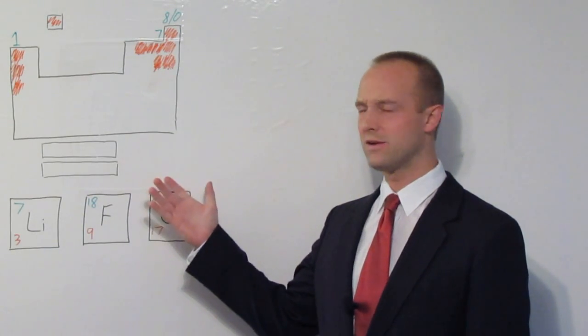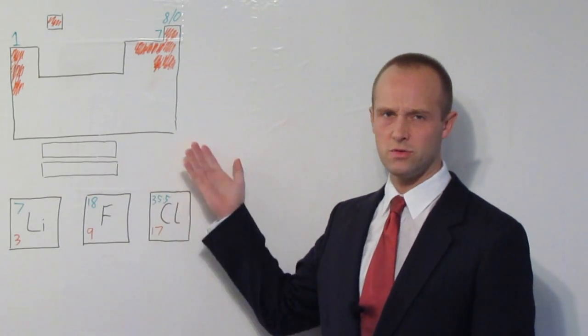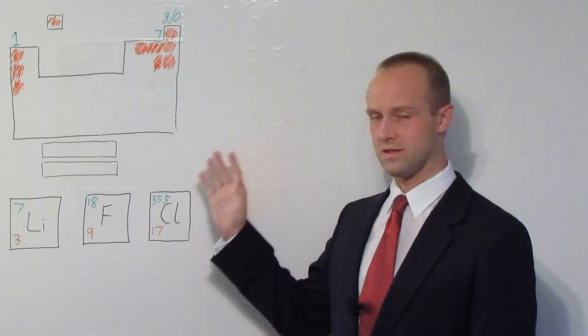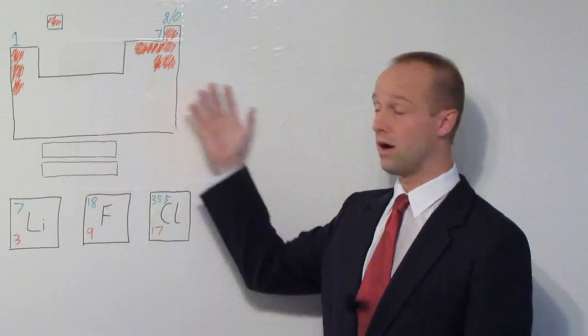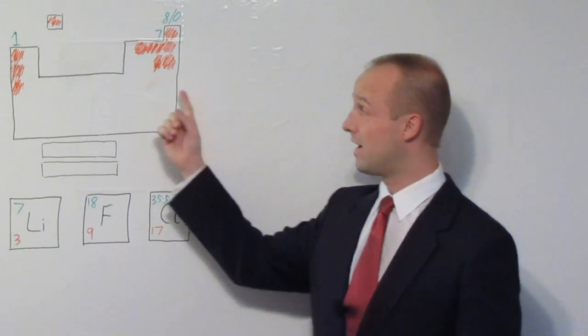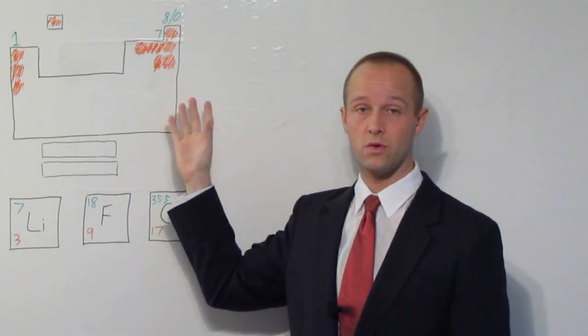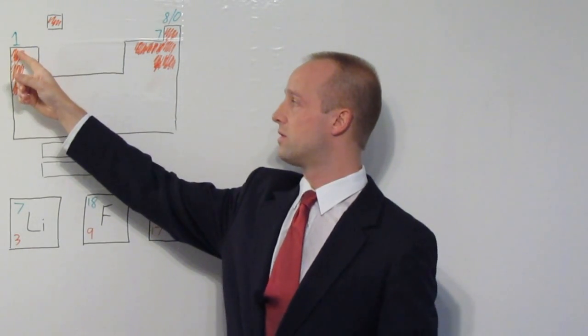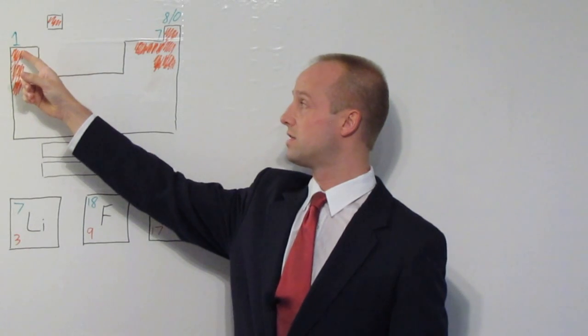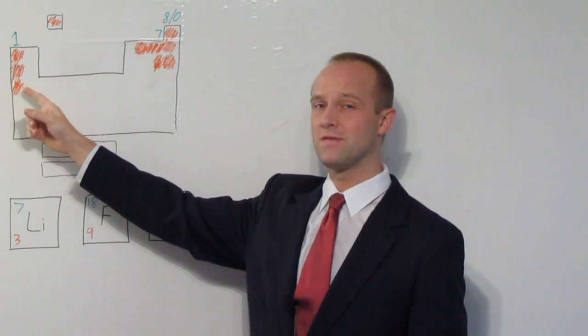Now, the periodic table can look kind of intimidating. There's over 100 elements in there, lots of stuff with lots of different electron arrangements, but you're actually not going to have to worry about the whole of the periodic table. You're going to have to worry about these parts in red. These are the bits which are going to crop up most commonly. In particular, you're going to be dealing with group one elements. So, we've got lithium, sodium. You might have to do potassium.